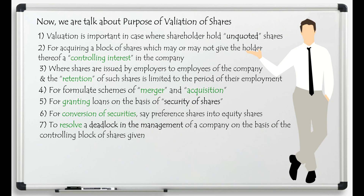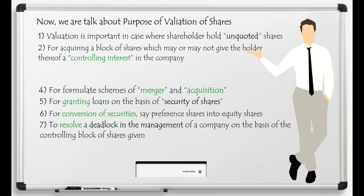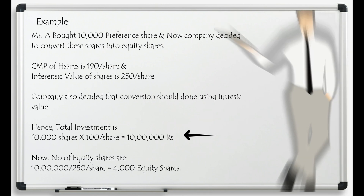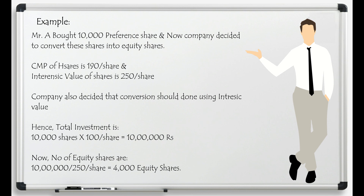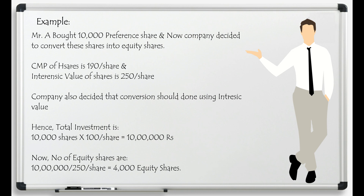When preference shares are converted into equity shares, valuation plays a very important role. For example, suppose Mr. A holds 10,000 preference shares at ₹100 per share — a total investment of ₹10 lakh. If the current market price is ₹190 per share but the intrinsic value is ₹250, and conversion is agreed at intrinsic value, then the new number of equity shares is ₹10 lakh divided by ₹250, which equals 4,000 equity shares to be issued on conversion.